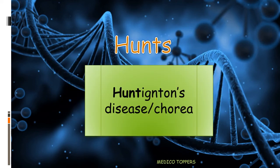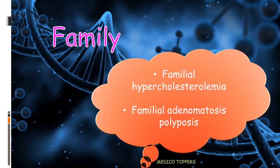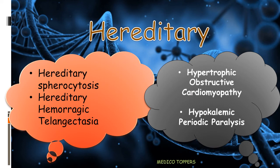'Hunt' indicates Huntington's disease (chorea), where there is a CAG repeat expansion. 'Vulnerable' — V indicates Von Willebrand disease. 'Family' indicates Familial Hypercholesterolemia and Familial Adenomatous Polyposis. 'Hereditary Lie' covers Hereditary Spherocytosis, Hereditary Hemorrhagic Telangiectasia, Hypertrophic Obstructive Cardiomyopathy, and Hypokalemic Periodic Paralysis.